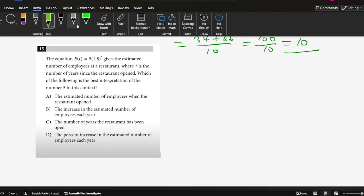Okay, now we come to question 15. The equation et equals 5 times 1.8 to the power of t gives the estimated number of employees at the restaurant, where t is the number of years since the restaurant opened.